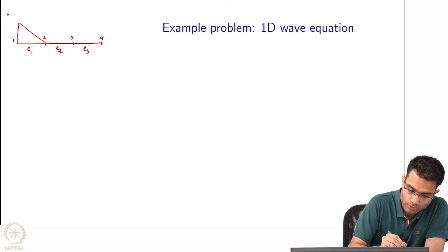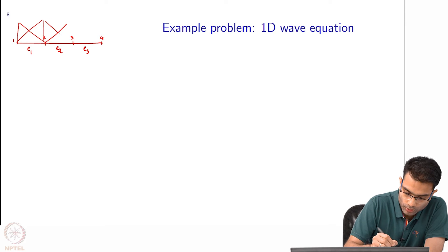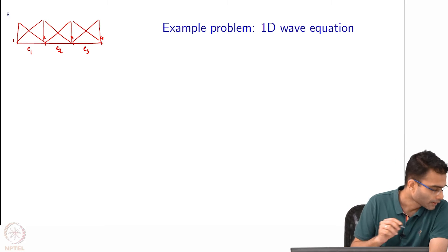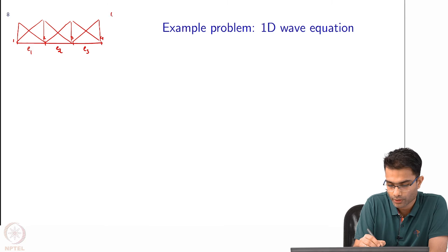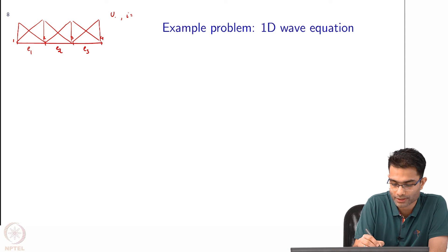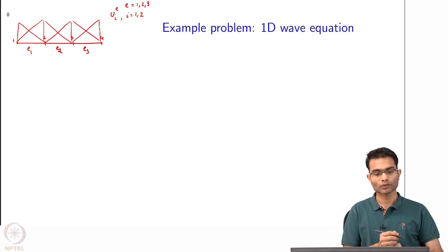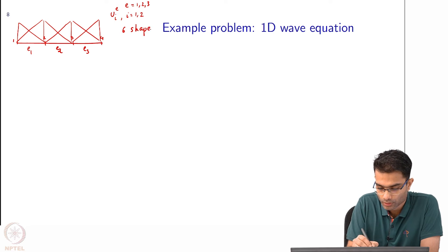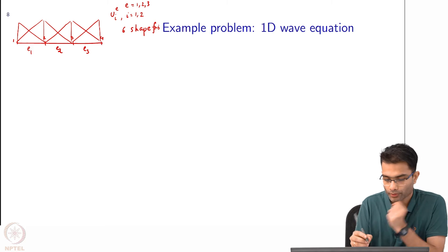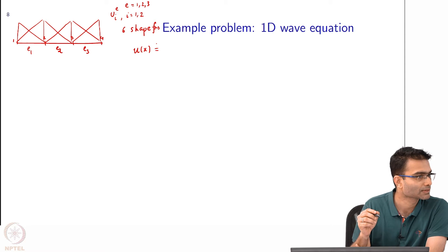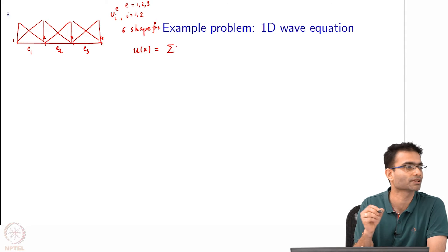What do they look like? This is my u_i where i equals 1 to 2 and e equals 1, 2, and 3 — a total of 6 shape functions. With this in mind, how do I write the field? I write the field u(x) in terms of these basis functions as a summation, and this time we will explicitly open up the summation.